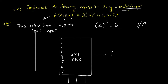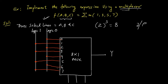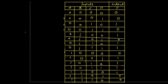According to our expression, the select lines select only inputs 1, 3, 5 and 7, so we simply connect inputs 1, 3, 5 and 7 to logic 1. The rest of the inputs — 0, 2, 4 and 6 — are connected to logic 0. In this way we can implement the expression using an 8-to-1 multiplexer.